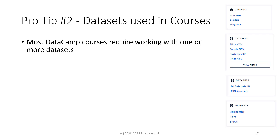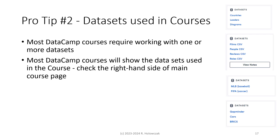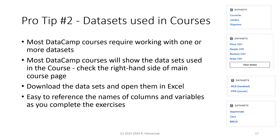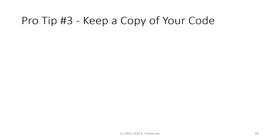Pro tip number two: look at the datasets used in courses. Most DataCamp courses require working with one or more datasets. Most DataCamp courses will show those actual datasets on the right-hand side of the main course page. You can download those datasets and open them up in Excel or in a text editor. This makes it easy to reference the names of the columns and variables, and you can explore the data a little bit before you work on the exercises.